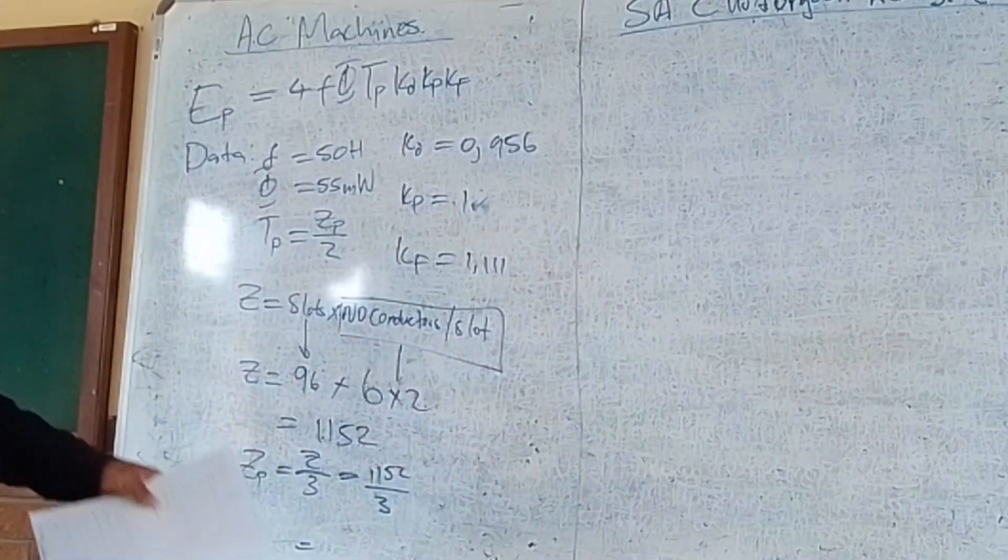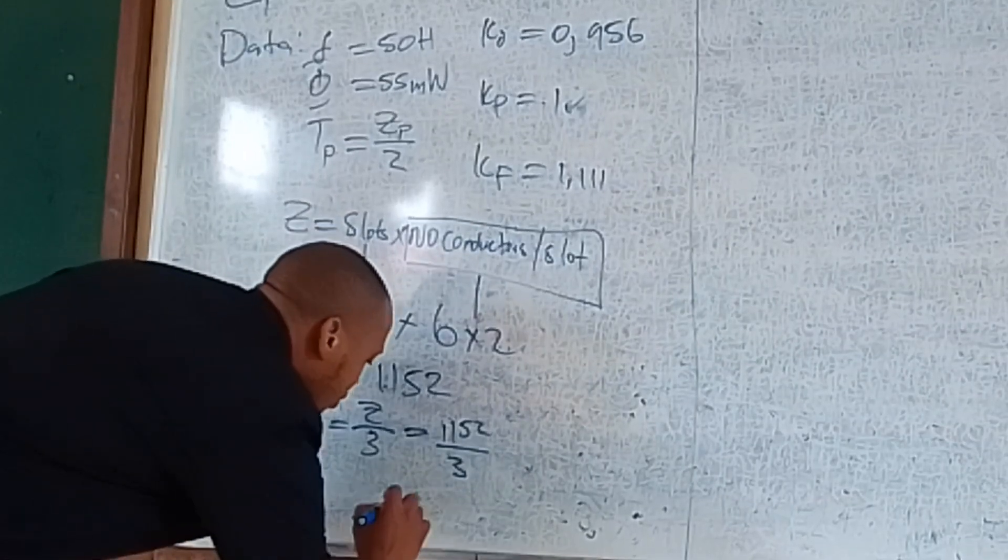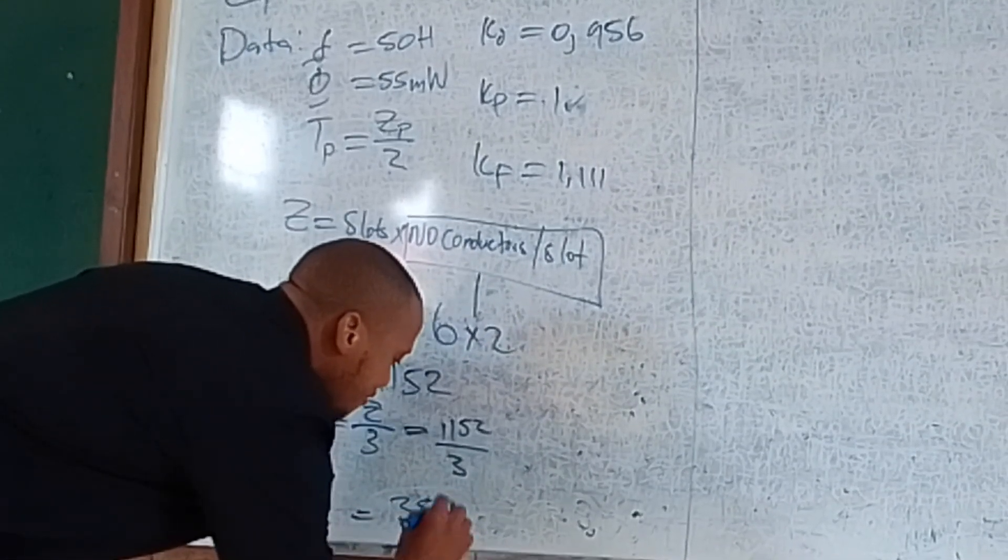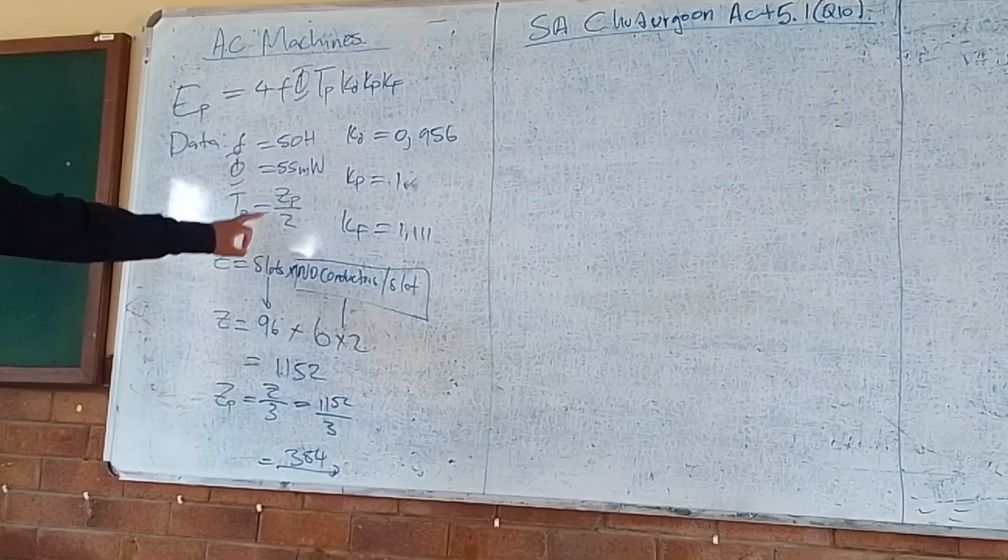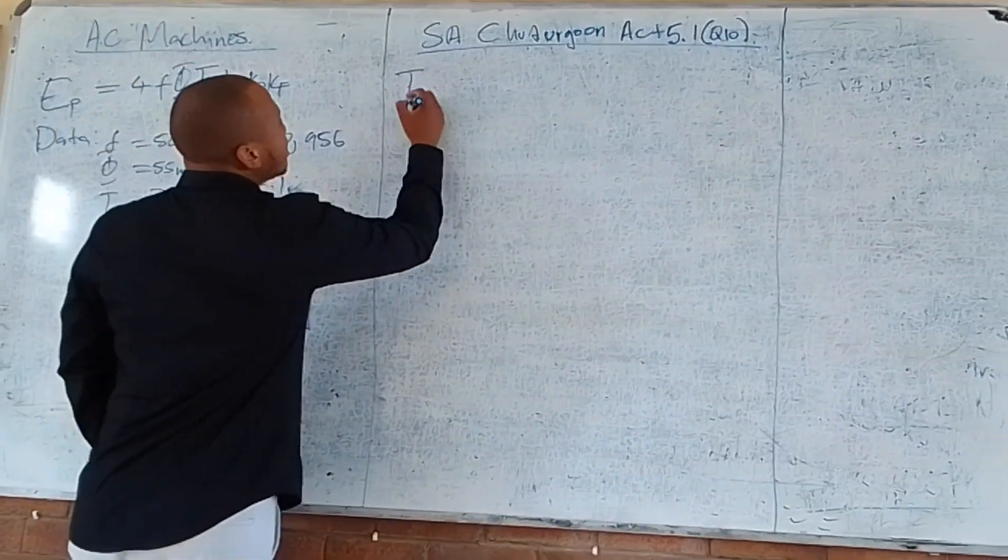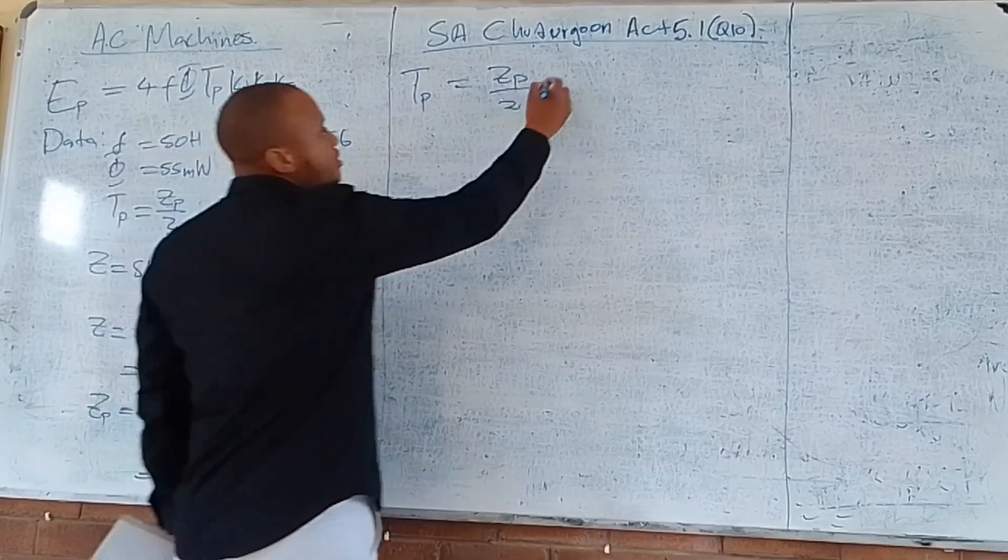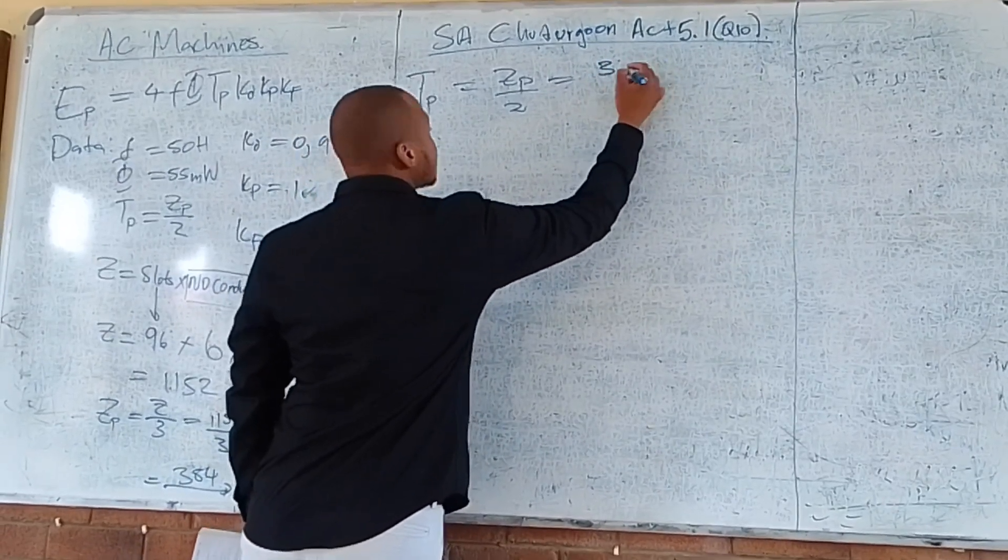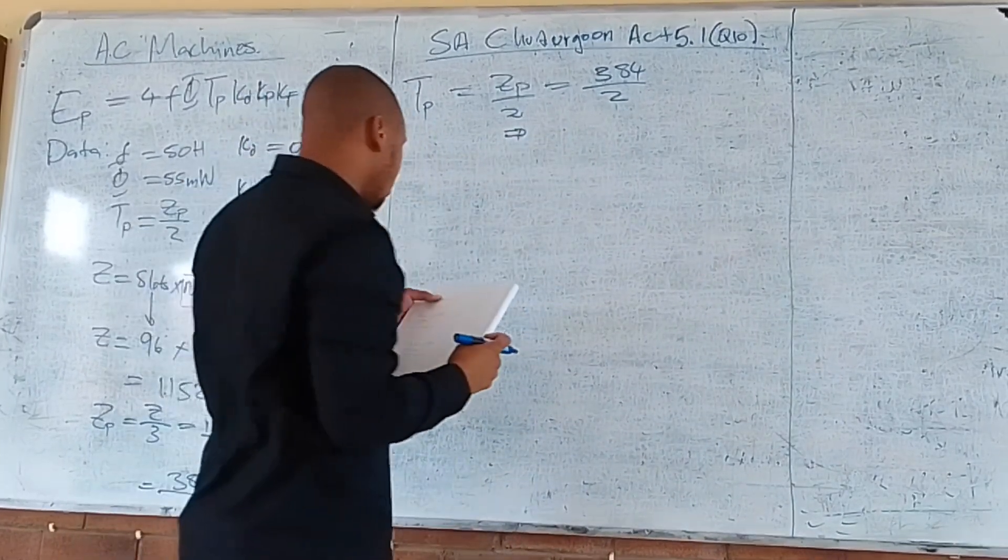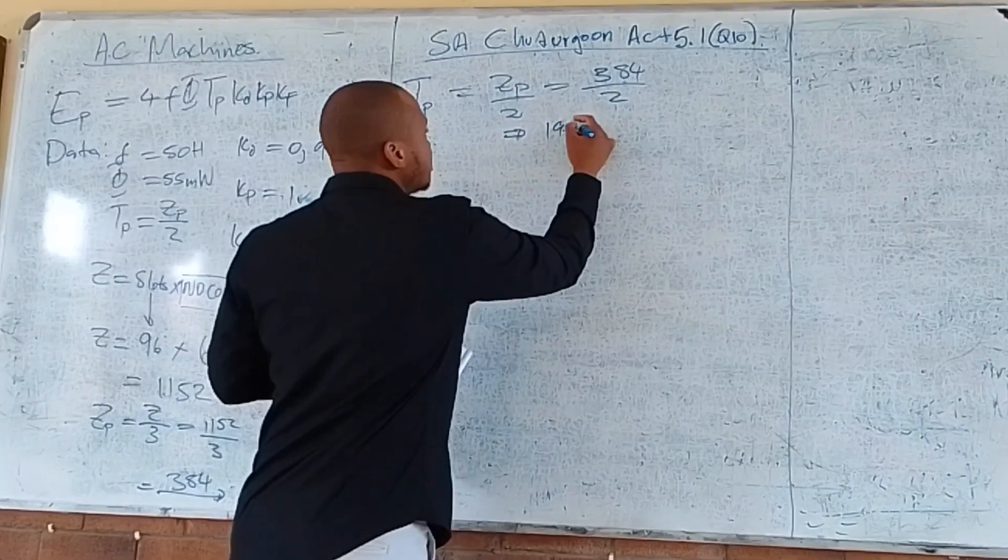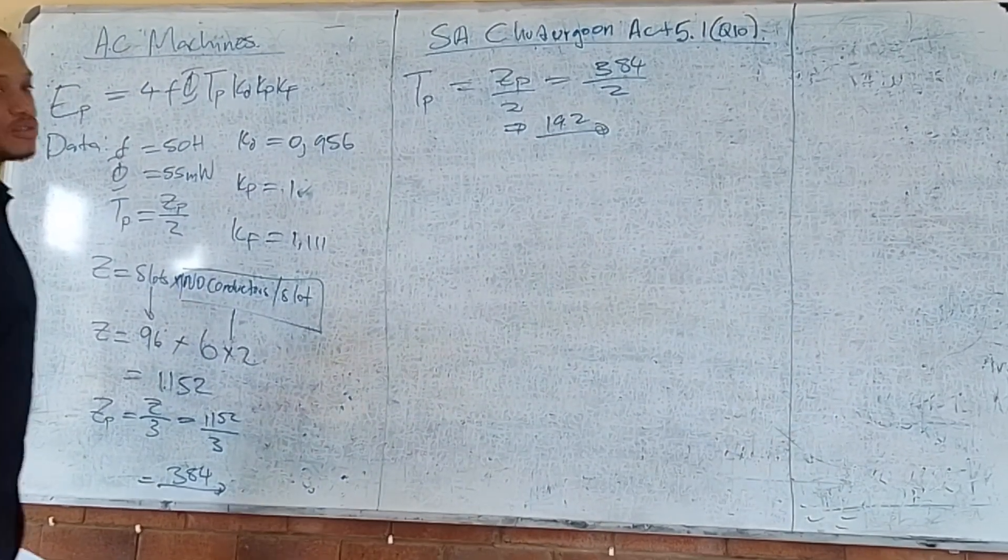If you calculate that in the calculator, Zp equals 384. Now we need to calculate turns per phase, which is Zp divided by 2. Tp equals 384 divided by 2, and that gives you 192. No units, it's just the number of turns per phase: 192 for this question.